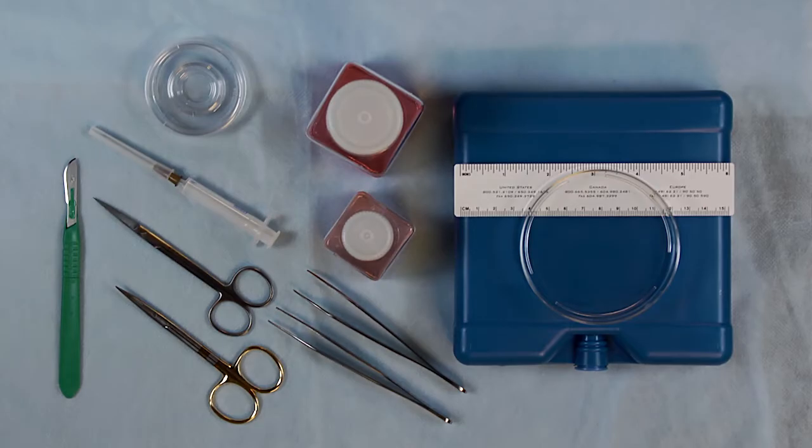And petri dishes. If you are aspirating follicles directly from the tissue, you will also need an 18-gauge needle with a 3cc syringe.